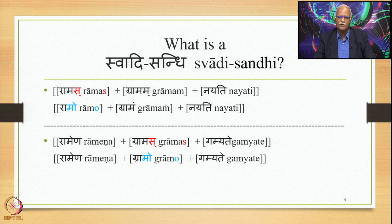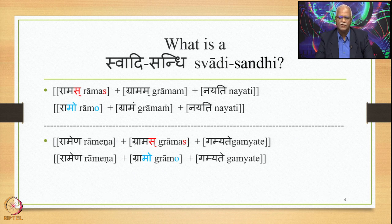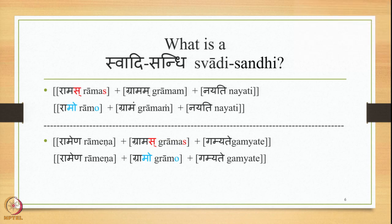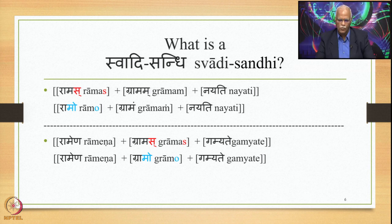Here is a specific example of Swadhi Sandhi. If you have Ramas plus Gramam plus Nayati — three Padas — Ramas is the first Pada, Gramam the second, and Nayati the third. Sa comes at the end of the first Pada, followed by Ga which is part of the Prakriti in the second Pada. Sa is part of Sub. This Sa gets substituted by Ru first, then by U, and then A and U get substituted by O. Finally we get Ramo Gramam Nayati. So Ramo is a Swadhi Sandhi example.